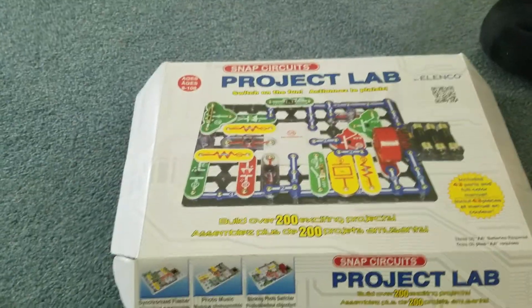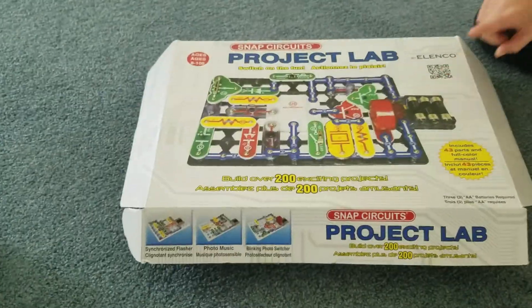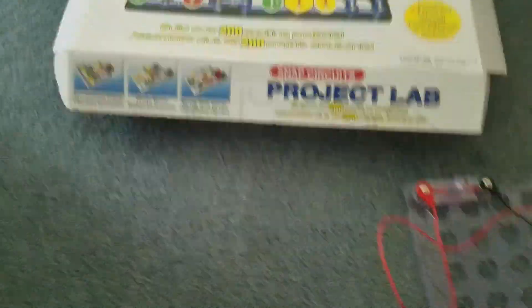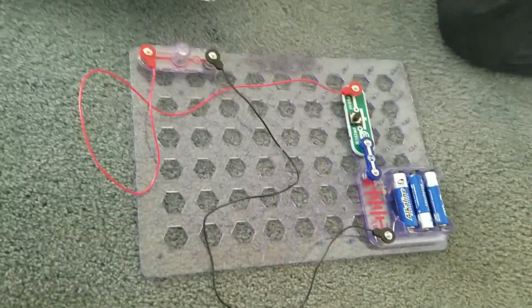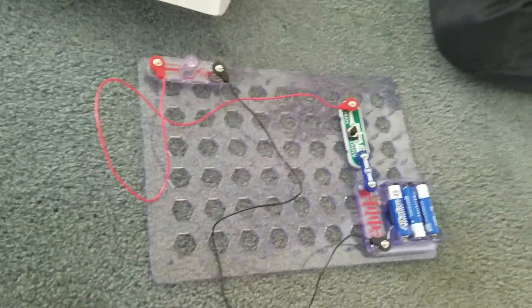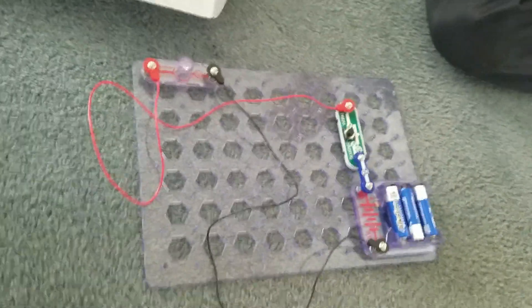Okay, guys, so here is the Project Lab kit. It's called Snap Circuits Project Lab. I don't know how much it costs, but this is build number three, which is a Morse reporter. So, guys, anyway, the Morse Code launcher, building number three. I will see you guys in the next video. Be sure to like, subscribe, and hit that notification bell. In three, two, one, peace.